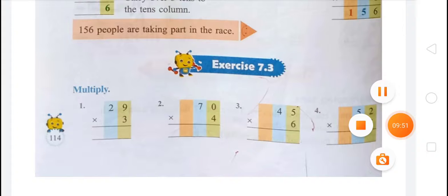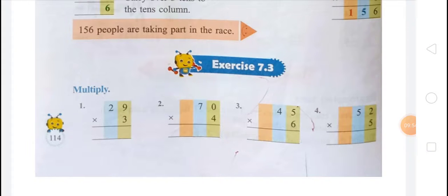Question number 3: 45 multiplied by 6. Six fives are 30, write 0 and carry 3. Six fours are 24, plus 3 carry equals 27. So the answer is 270.